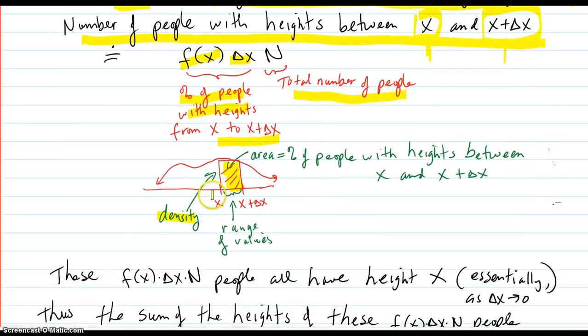Your density is your f of x value from here to here. The range of values is your x to x plus delta x. And the area, the product of those two, the f of x times delta x,